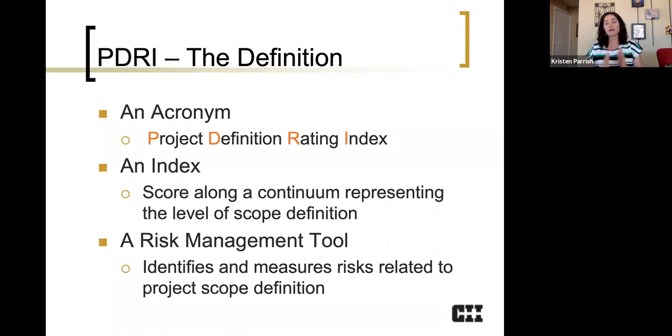So this means we are scoring along a continuum, and that continuum represents the level of scope definition, with zero, the lowest possible score being the best, and 1,000, the highest possible score being worst. So it's a risk management tool. The idea of PDRI is to provide a structured, comprehensive checklist that identifies and measures risks related to project scope definition.